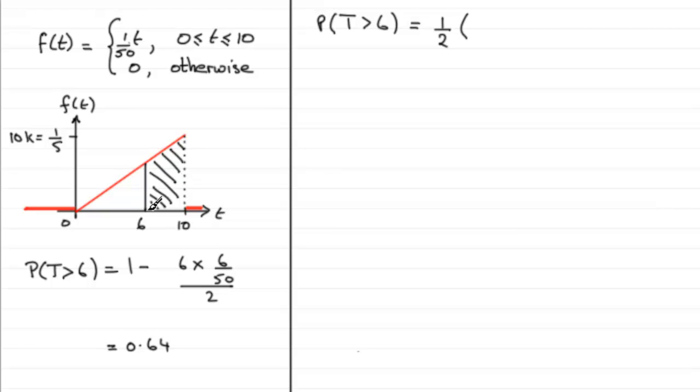The parallel sides: this height up here was 6/50 by putting 6 into the function, plus this height which is 1/5. We multiply this by the distance between the parallel lines, which is 4 units, times 4. That's the area of the trapezium, and if you work that out you get the same answer, 0.64.